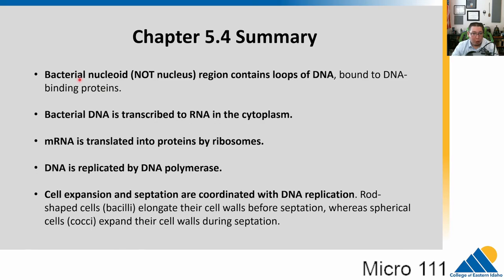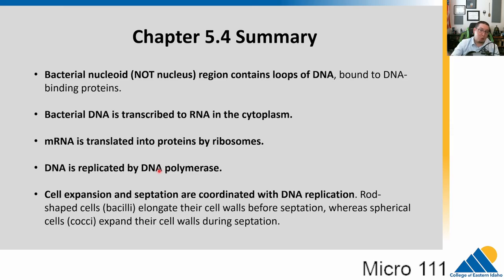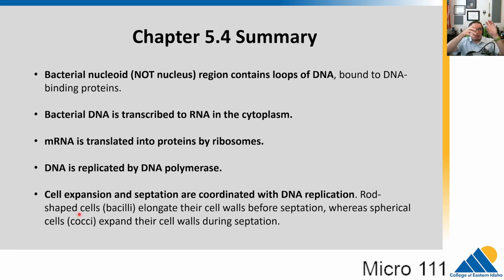The nucleoid — not the nucleus — contains the loops of DNA, that single chromosome that bacteria have. The DNA is transcribed into RNA right there in the cytoplasm because there's no nucleus, and that mRNA gets turned into protein by ribosomes at the same time. This allows bacteria to replicate really quickly. DNA is replicated by the enzyme DNA polymerase, which we'll talk about a lot in the DNA chapter — we're going to use this enzyme to do PCR, polymerase chain reaction, to replicate DNA in a test tube in the lab. Cell expansion and separation must be organized and can't occur until DNA replication has happened. Rod-shaped cells elongate the wall and then septate, whereas spherical ones expand the wall. The way things divide and end up in different chains or groups can help us identify them.